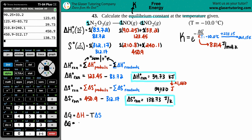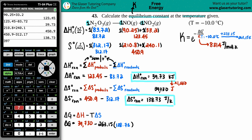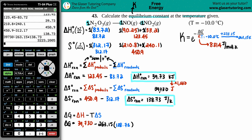Plugging in: ΔG = 39,730 minus (263.15 × 138.73). Calculating on the calculator: 39,730 minus 263.15 times 138.73 gives ΔG = 3,223.2005 joules. Note we don't round here since this is not the final answer.